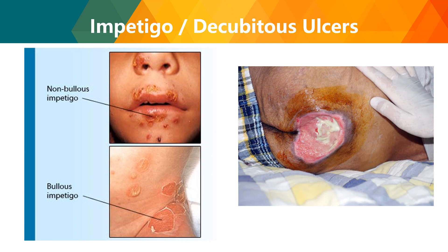Impetigo or decubitus ulcers include non-bullous and bullous impetigo. These are essentially bed sores, acquired by elderly or immobilized patients who remain in bed all the time. To prevent these ulcers, patients who cannot move — especially those in a coma — should be repositioned or turned regularly.